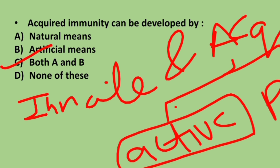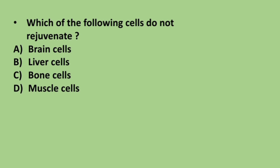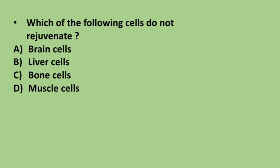Acquired immunities are of two types: active and passive. An example of active immunity is vaccination, and passive immunity is exemplified by mother's milk. The next question: which of the following cells do not rejuvenate? Options are brain cells, liver cells, bone cells, and muscle cells. Brain cells do not rejuvenate.